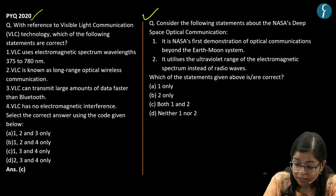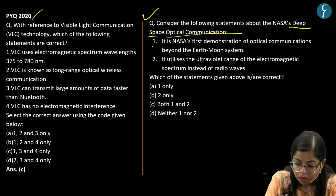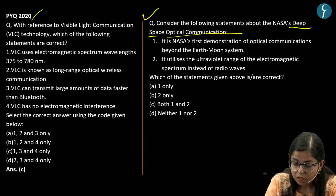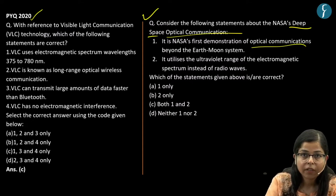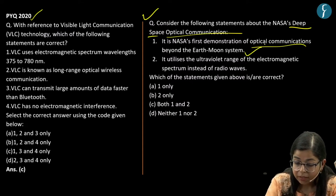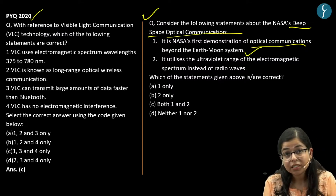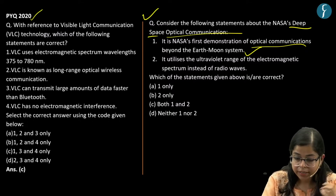This question says: consider the following statements about NASA's deep space optical communication. The first statement says it is NASA's first demonstration of optical communication beyond the Earth-Moon system. This is a correct statement, as NASA's deep space optical communication is indeed the first demonstration of optical communication beyond the Earth-Moon system.